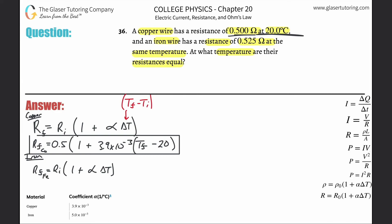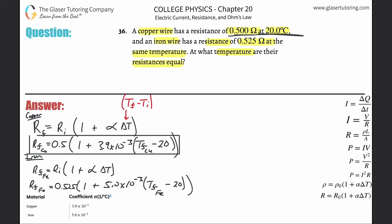The same thing for iron: the final resistance R_f_Fe equals the initial resistance of 0.525 ohms, multiplied by (1 plus alpha for iron, which is 5.0 × 10⁻³, times the change in temperature T_final − 20). So now we have these two equations.